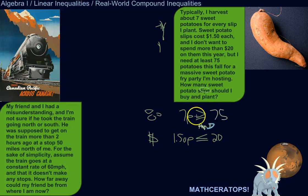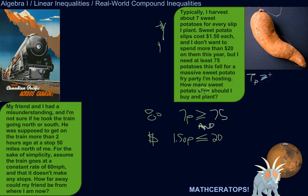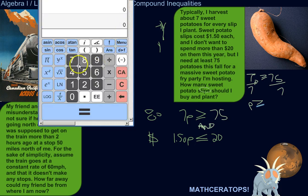I can solve these separately. So 7P is greater than or equal to 75. Divide both sides by 7 to get P by itself. So P is greater than or equal to whatever 75 divided by 7 is — that's going to be some kind of decimal.